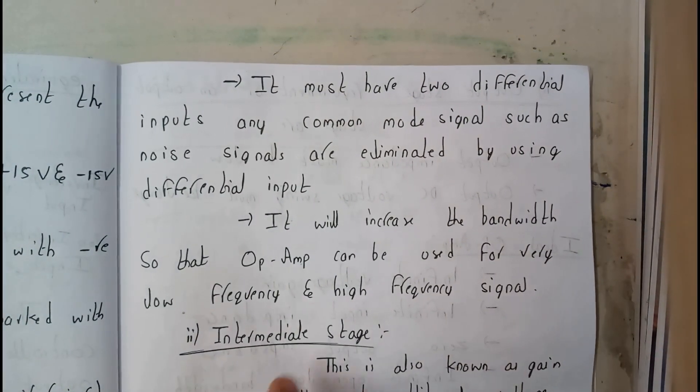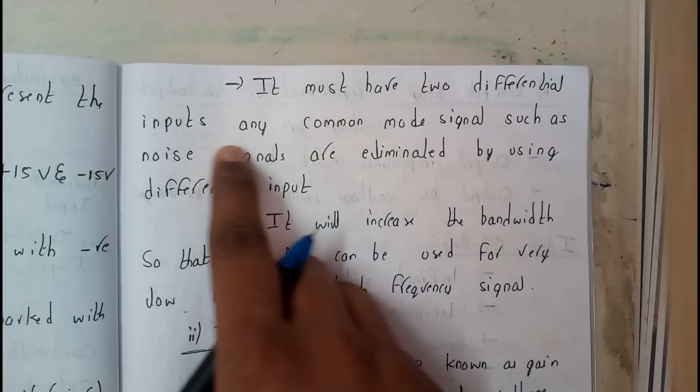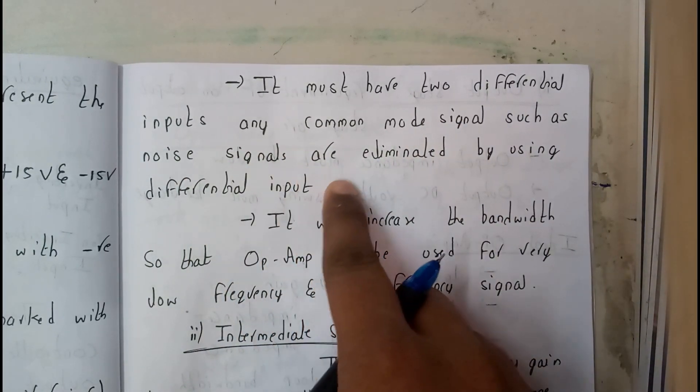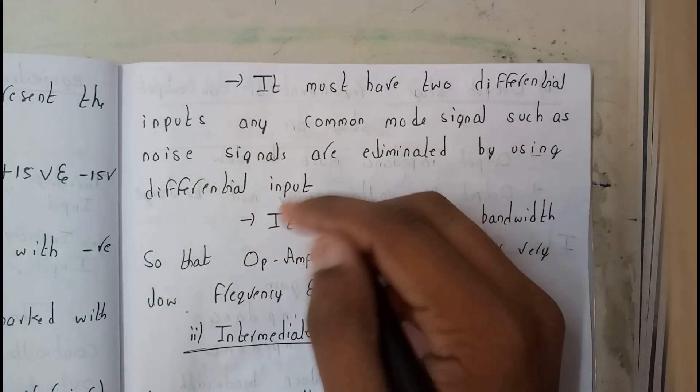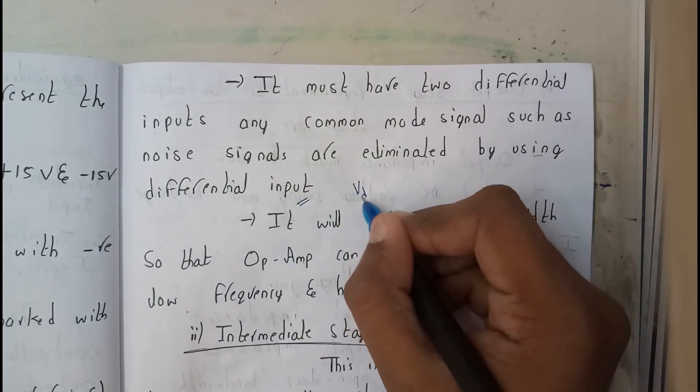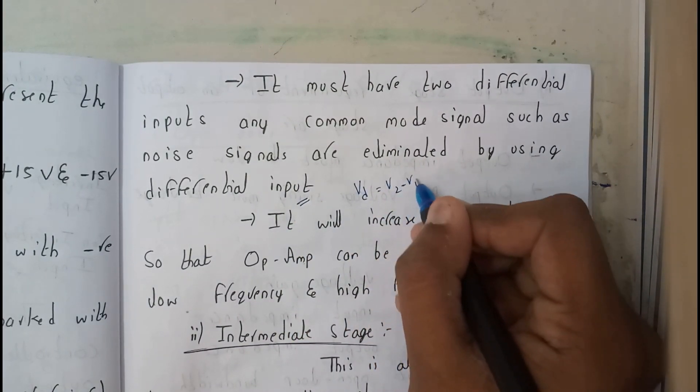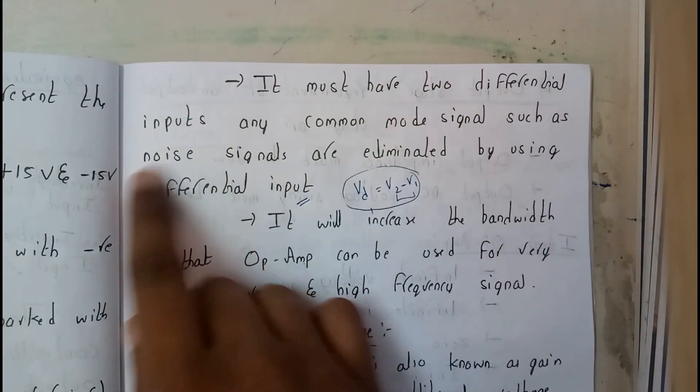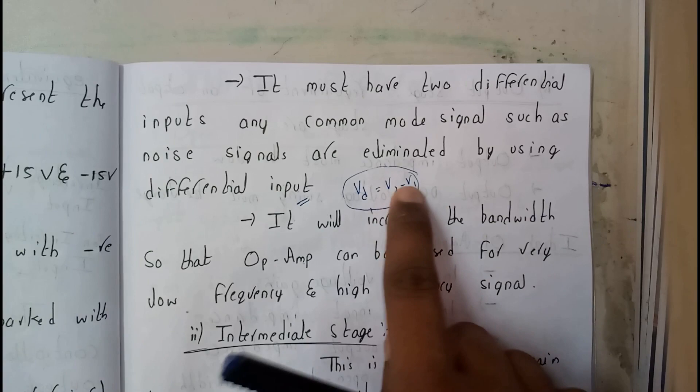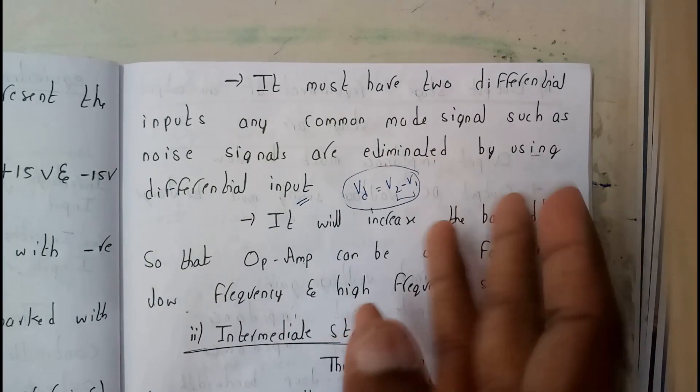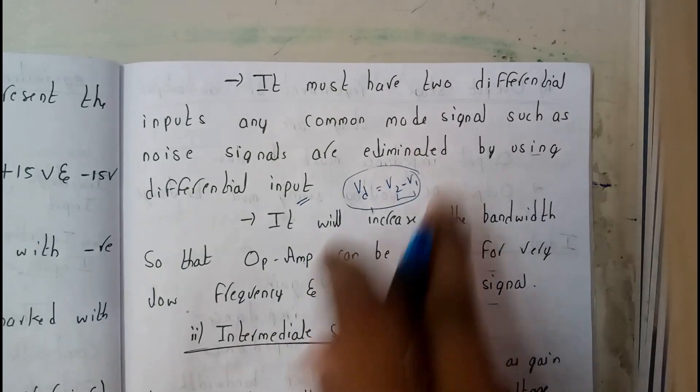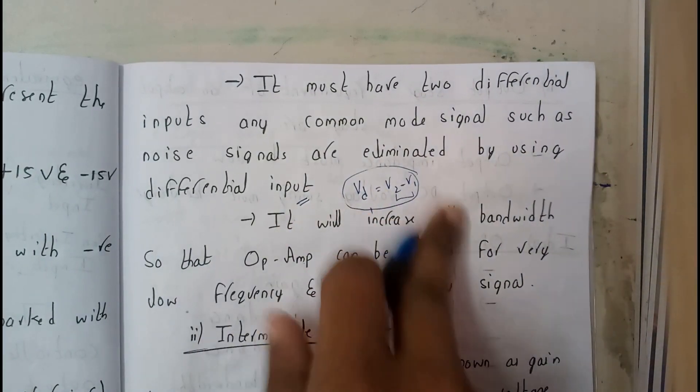So the next point is, it must have two different inputs. Any common mode signal such as noise signals are eliminated by using differential input. As I hope everyone remember the thing that Vd equals V2 minus V1. So if there is a noise in between them, by subtracting these, we're gonna remove that noise out of our signal. We're gonna eliminate by using the differential input method.